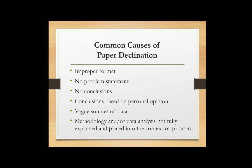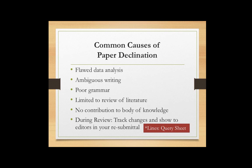There are common causes for papers being declined by reviewers. One simple one is improper format. Often authors do not provide a problem statement, don't provide proper conclusions or any conclusions at all, and sometimes those conclusions are based on personal opinion. We also see instances with vague sources of data and a methodology that is not explained thoroughly. Other items to consider are flawed data analysis — make sure your data analysis is straightforward and understandable. Try to have clear, unambiguous writing. The literature review is sometimes very limited when we expect it to be thorough and include seminal sources.